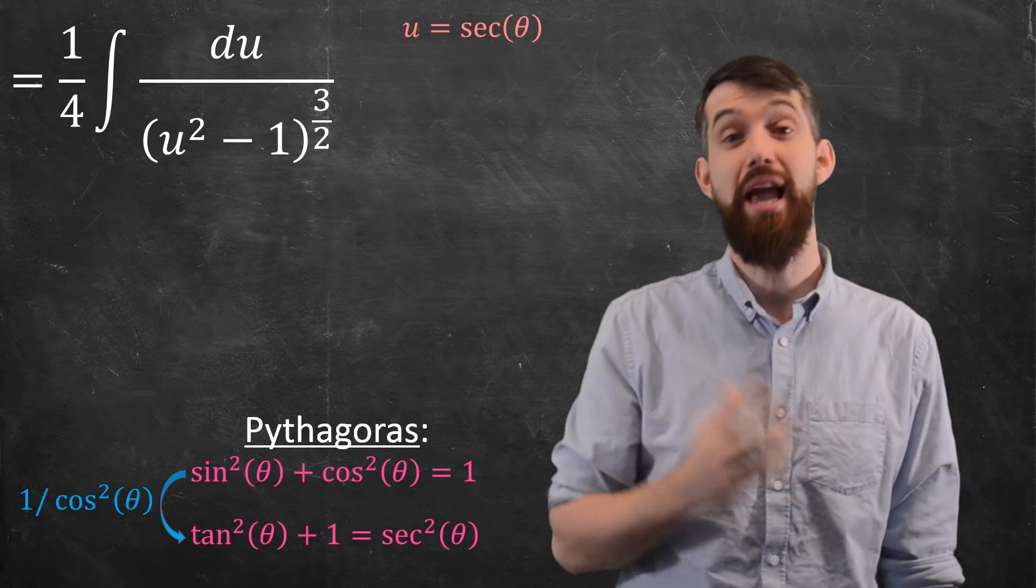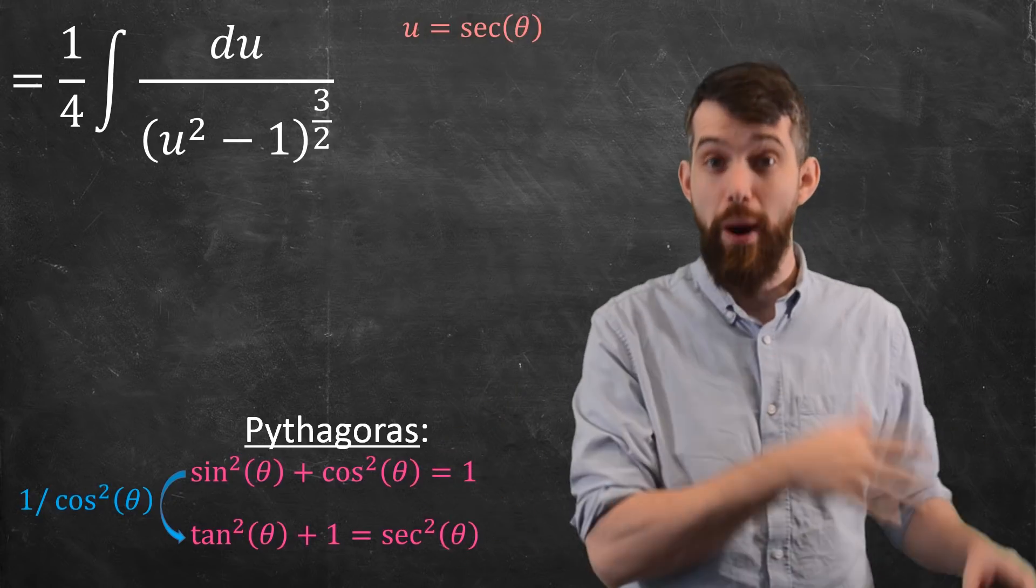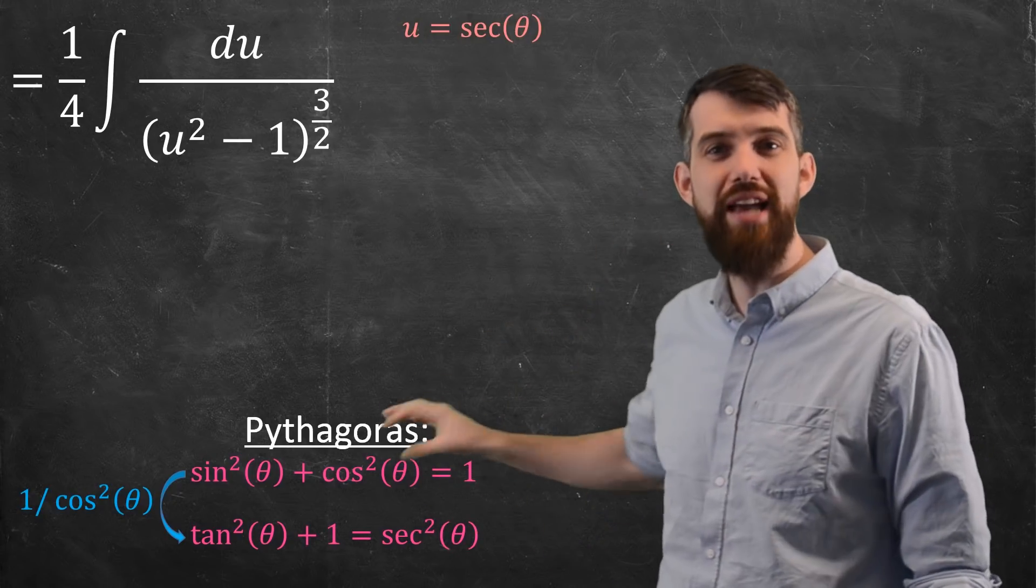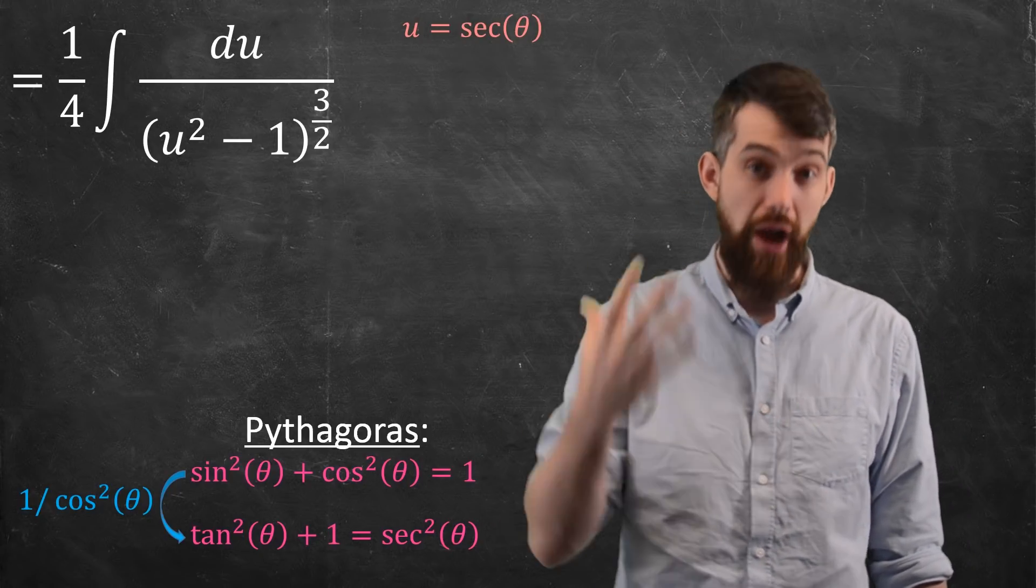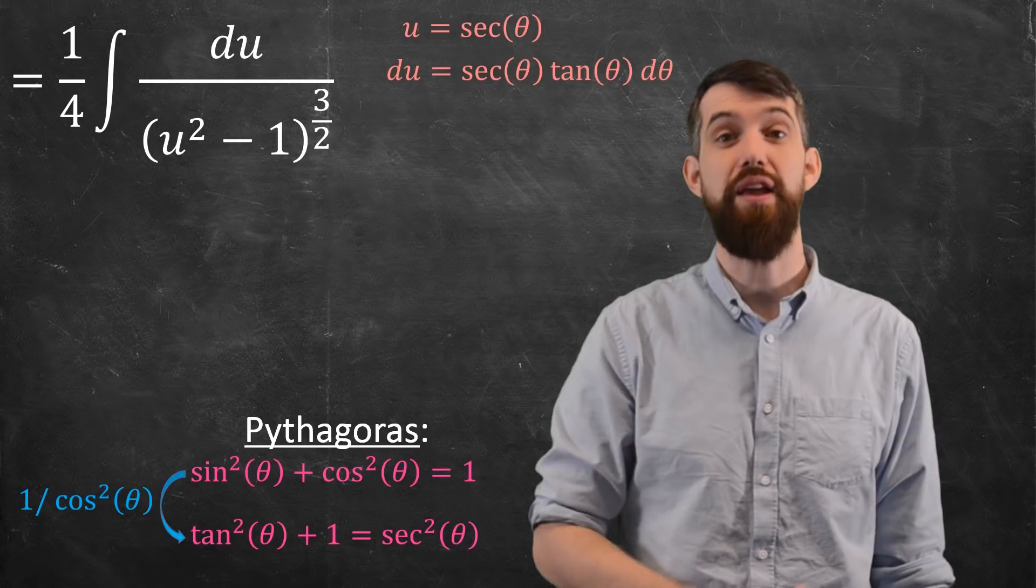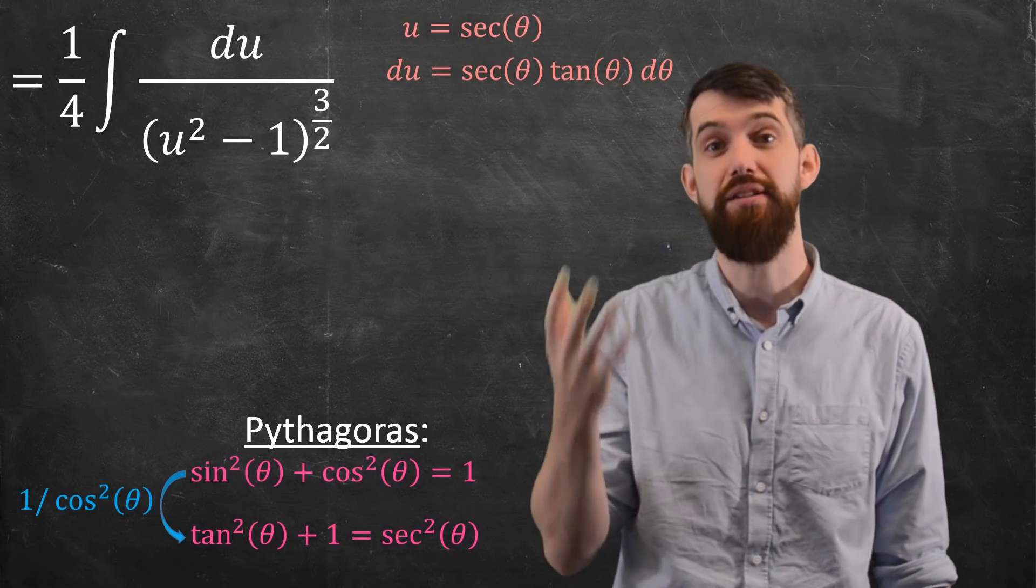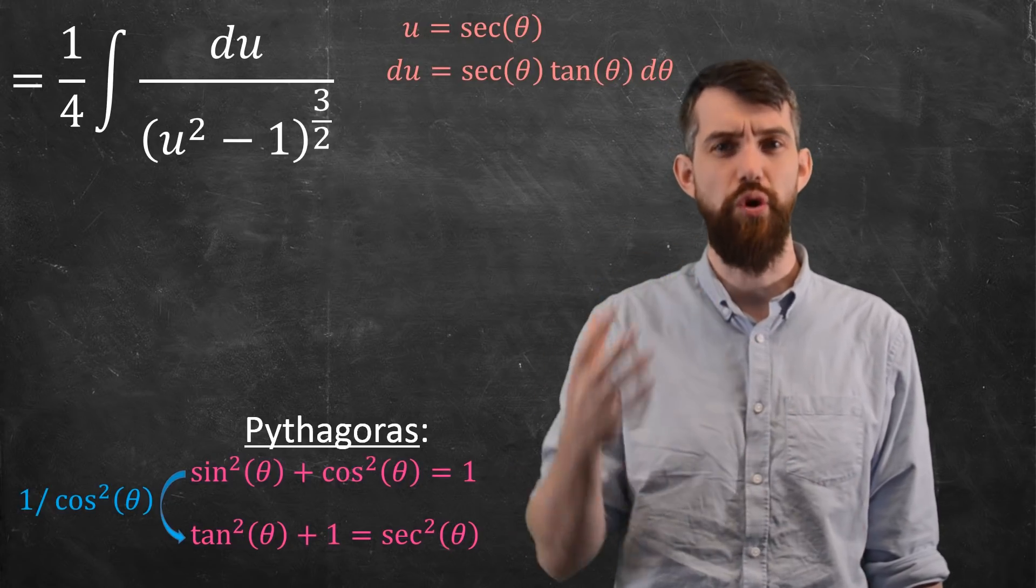That's going to be my trig substitution, u is secant of θ. You of course are allowed to go to that chart I've shown before for how to come up with a trigonometric substitution. But I think it's better if you think it through and think through the identity that you're going to use to realize it's going to be best as secant of θ. Nonetheless, given that we've chosen secant of θ, that means our du is going to be secant of θ tangent of θ dθ. And then the final thing that we need to figure out is the restriction on the domain.